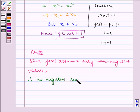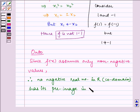therefore no negative real number in R (co-domain) has its pre-image in R (domain).